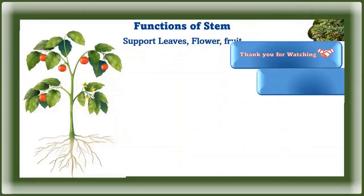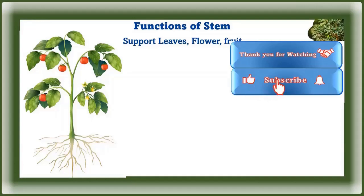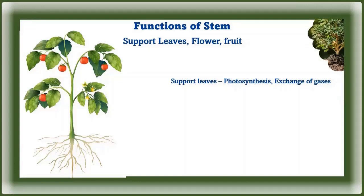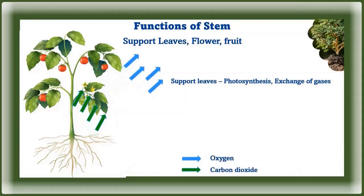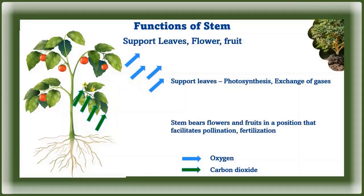The stem supports leaves, flowers, and fruit. It allows leaves to arrange themselves so they can receive direct sunlight in order to efficiently perform photosynthesis. The arrangement and position of leaves also allow for gas exchange. The stems bear fruits and flowers in a position that facilitates the process of pollination and fertilization.